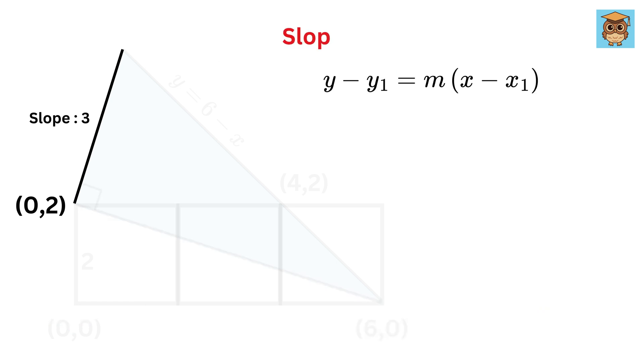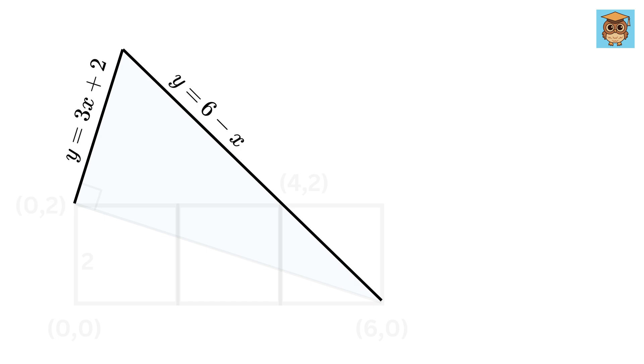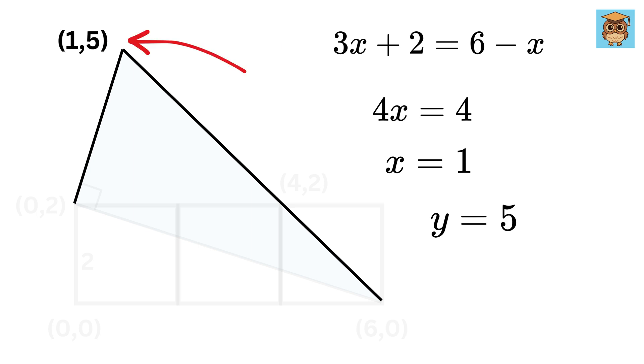So using the slope point formula, the equation of this line will be y minus two equals three times x minus zero. So y equals three x plus two. Nice. So we can now equate both of these y to get three x plus two equals six minus x. This gives four x equals six minus two, or four, which gives x equals one.